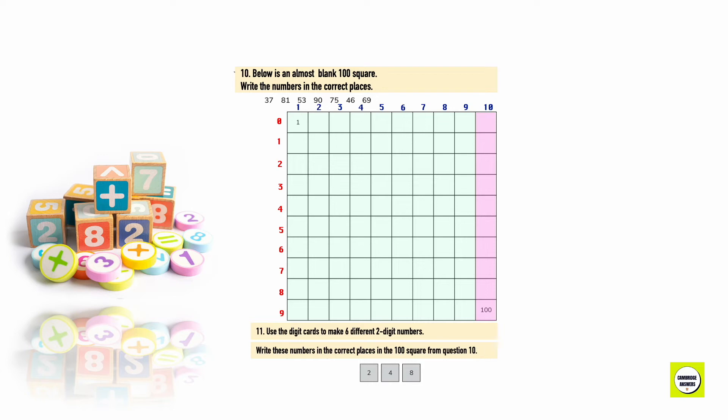Below is an almost blank 100 square. Write the numbers in the correct places. 1 is already placed at the top left corner and 100 is at the bottom right. Each row in the 100 square represents 10 numbers. To place a number consider its tens and ones. The tens digit tells you which row the number is in. And the ones digit tells you what column. Except for the numbers that come in the count by tens. They will be written in the last column. So let's start. 37. 37 has 3 tens which means it will be placed in the third row. It has 7 ones so it will be placed in the seventh column. 37.